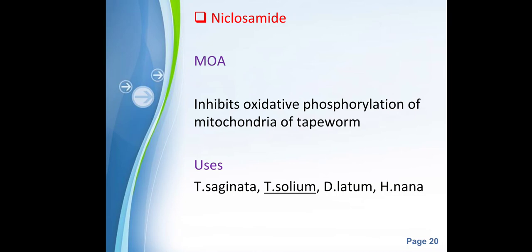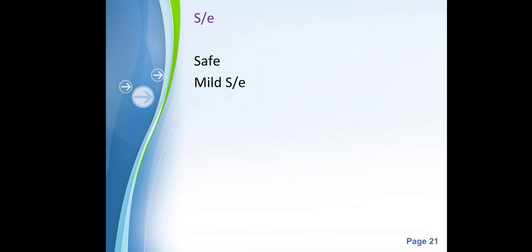The next important drug is niclosamide. Its mechanism of action is inhibition of oxidative phosphorylation in the mitochondria of tapeworms, thereby killing them by blocking energy generation. It is used to treat Taenia saginata, Taenia solium, Diphyllobothrium latum, and Hymenolepis nana. Niclosamide is usually safe with only mild side effects.